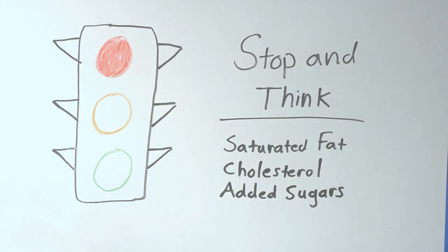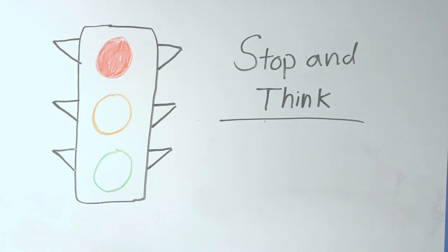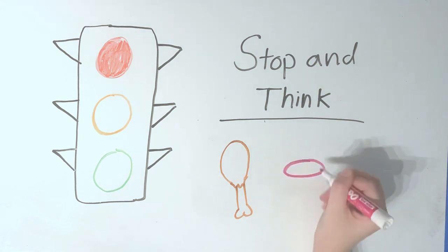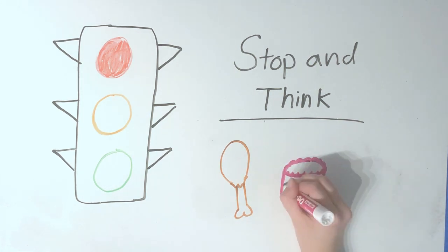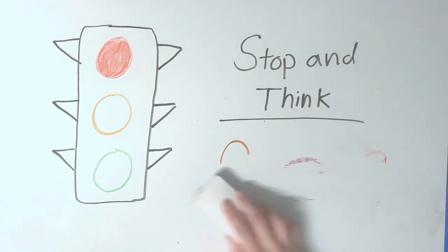It's okay to have a little bit of these nutrients, but too much can lead to health problems down the road. You may want to stop and think before eating foods that are high in any of these three nutrients, like fried foods, baked goods, or soda. It's okay to eat these foods sometimes. You might want to limit eating them to just every once in a while instead of all the time.